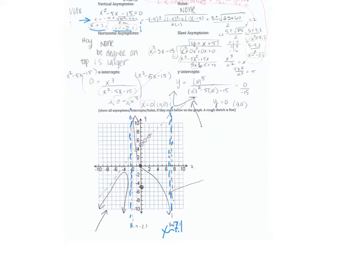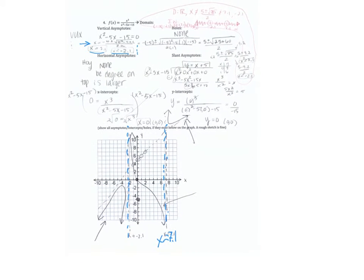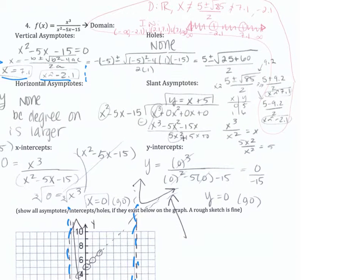Horizontal asymptotes. There's none because the degree on top is larger than the bottom. Slant asymptotes. Degree on top is one larger than the bottom, so we do long division. So, it's x cubed on top, divided by x squared minus 5x minus 15. Always put zeros as placeholders. So, we have no degree 2, so 0x squared, no x, no degree 1, and no constant. Put a zero. Leading term divided by leading term. So, x cubed divided by x squared is x. Put that on top of the x column. Multiply that by everything in front. x times x squared is x cubed. x times negative 5x is negative 5x squared. x times negative 15, negative 15x. Subtract.